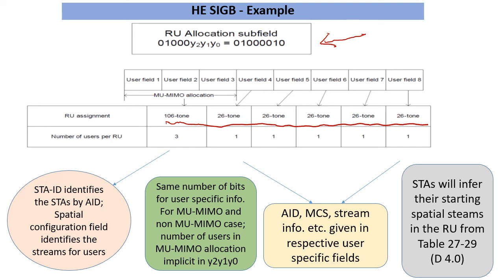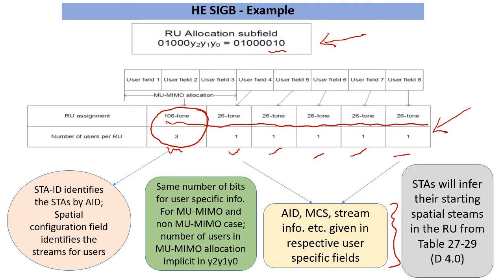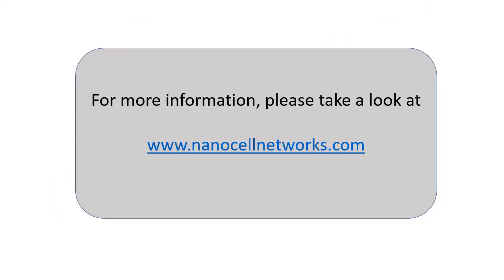Because of the last three bits having a specific value, there are three users in the 106-tone RU, so that's where MU-MIMO is happening. In the user-specific information, we'll first have information for those three users, then the remaining allocations in an ordered fashion, with a specific length of bits for each user's scheduling information. Each station can infer everything they need to know about their schedule — referred to by their association IDs — with MCS information and all details given for each user. I hope that gives some insight into downlink multi-user scheduling. For more information, please take a look at our website and we'll be back with more videos. Thank you.